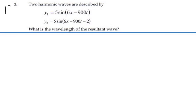Here's problem 18.3. Two harmonic waves are described by y1 = 5sin(6x - 900t) and y2 = 5sin(6x - 900t - 2). What is the wavelength of the resultant wave?